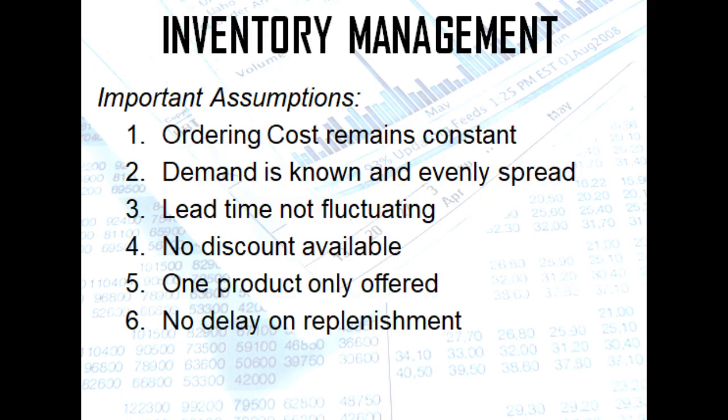Now, what are the important assumptions when it comes to EOQ? Number one, ordering cost remains constant. Number two, demand is known and evenly spread. Number three, lead time is not fluctuating. Number four, no discount is available to customers. Number five, one product only is offered. Number six, there is no delay on replenishment. It is an ideal scenario — all of these must be met to apply the EOQ model.